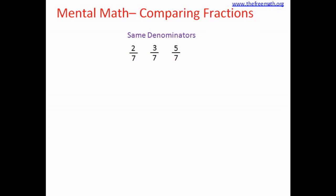We are going to see how to do mental math for comparing fractions. The first one is pretty easy. When the denominators are the same, we call these like fractions. The fraction with a smaller numerator is the smaller fraction. That means 2 over 7 is smaller than 3 over 7, which is smaller than 5 over 7.